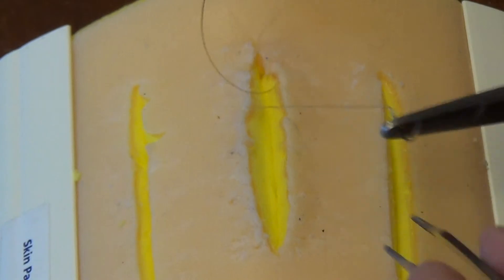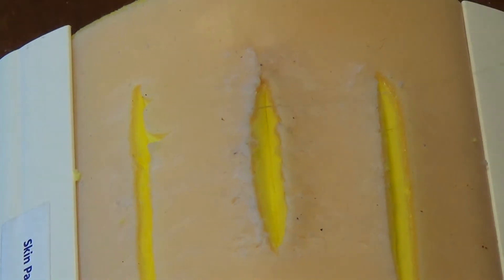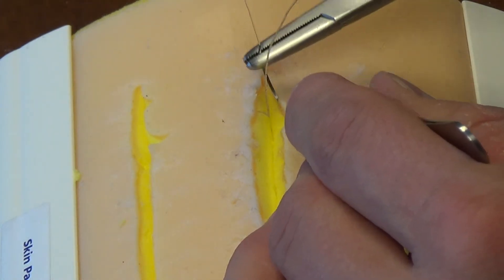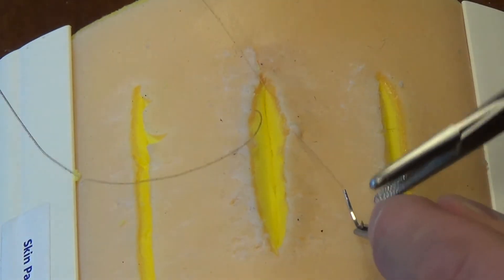You can see these throws are more horizontally based than deep vertical, as we've shown in some of the other demonstrations. Just right beneath that layer of the skin.